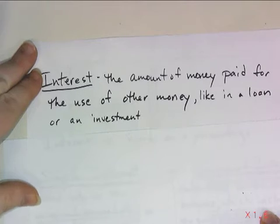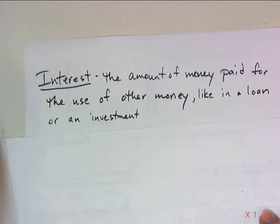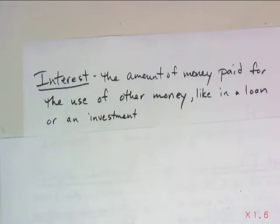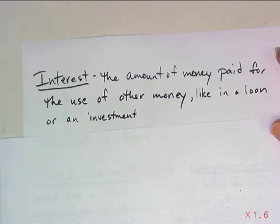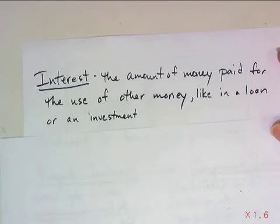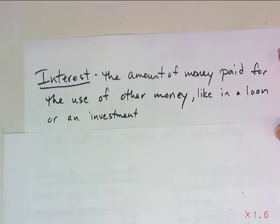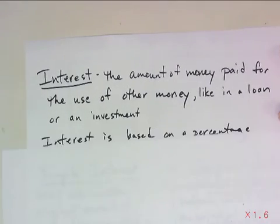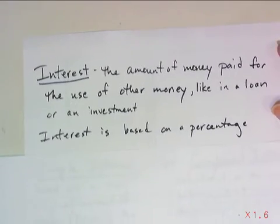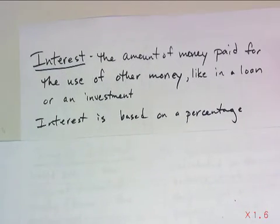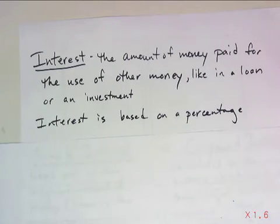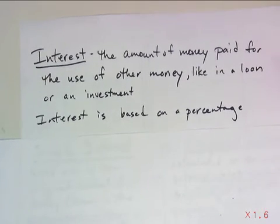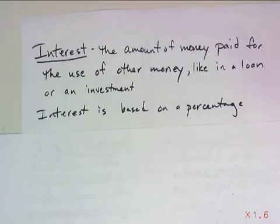First of all, interest on its own just means the amount of money paid for the use of other money — for example, in a loan or an investment. Interest is always based on a percentage of the money being loaned or invested, but how you calculate that interest depends on what type of interest it is.